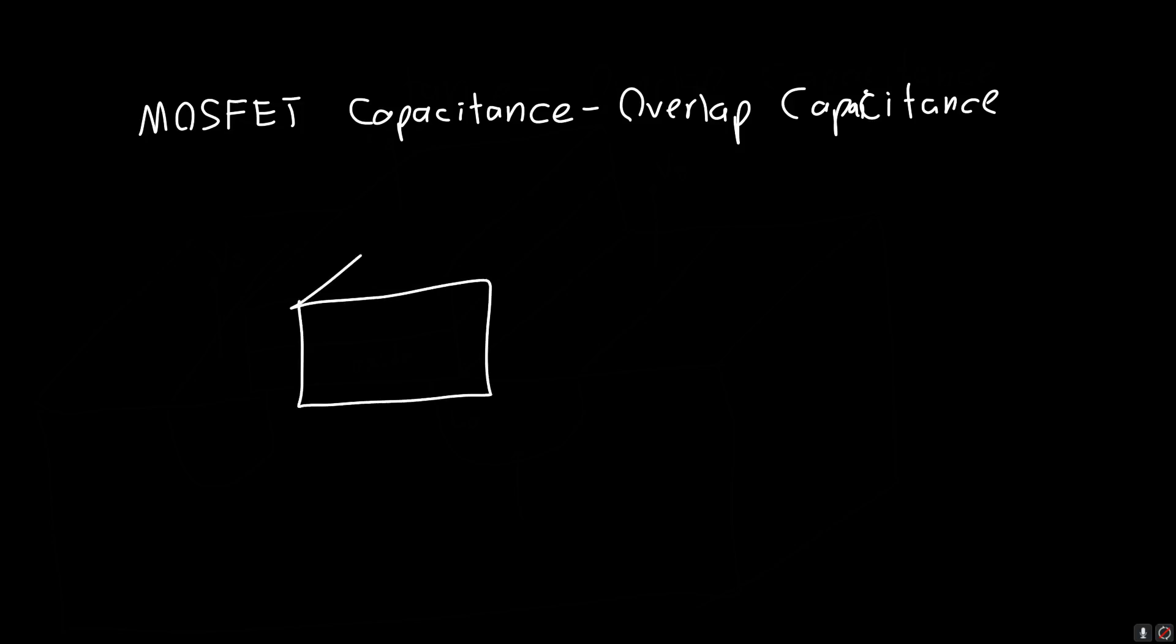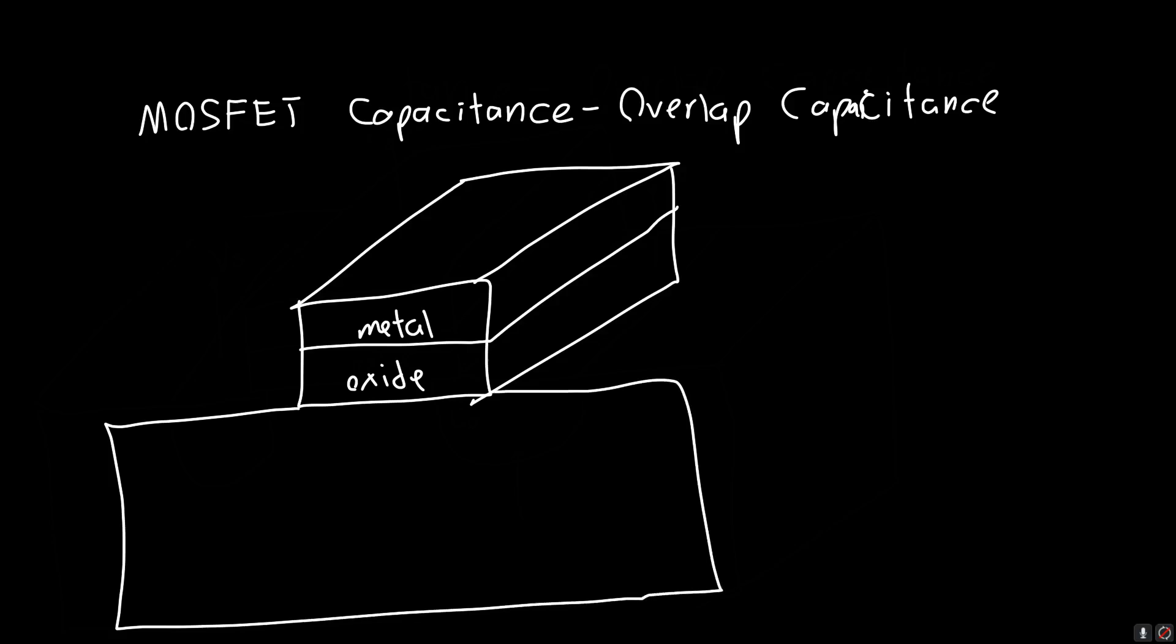So if we draw out the MOSFET structure, we know we've got our metal, we've got our oxide, and we've got the bulk, or the substrate, or the body, depending on how you're feeling that day. I'm just going to call it the body.